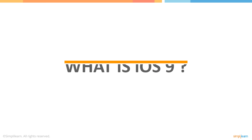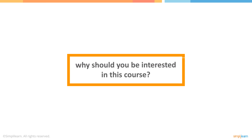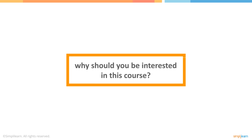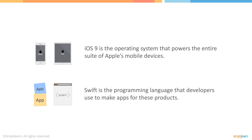So what is iOS 9? What is Swift? And more importantly, why should you be interested in this course? The short answer is that iOS 9 is the operating system that powers the entire suite of Apple's mobile devices, and Swift is the programming language that developers use to make apps for these products.